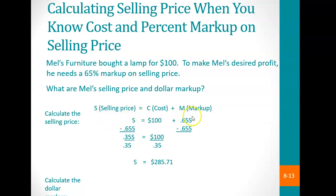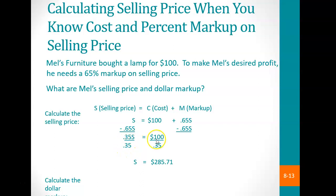Selling price equals cost plus markup. Because we know the cost is $100, the markup would be 65% of the selling price. Using our algebra skills, we want to solve for the unknown — the selling price — so we combine the like variables. With 0.35S equals the cost, divide both sides by 0.35. Therefore, the selling price equals $285.71.